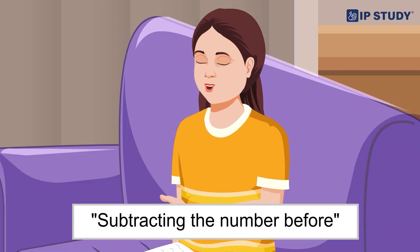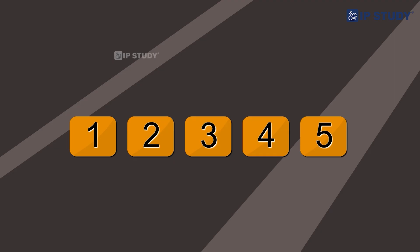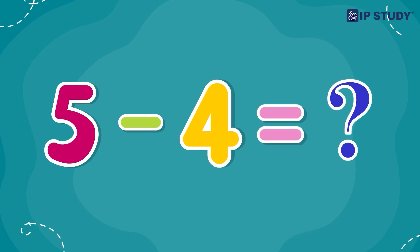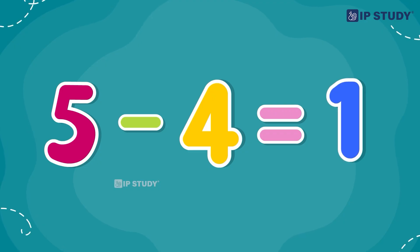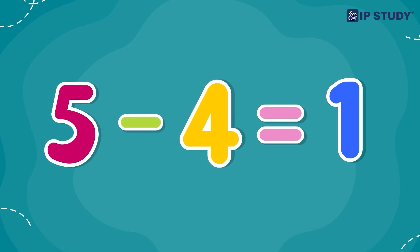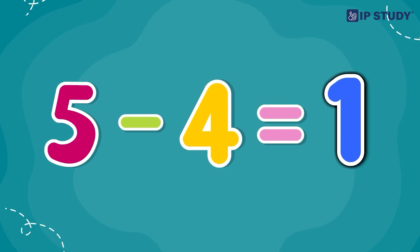Grandpa explains subtracting the number that comes right before. For example, the number before 5 is 4. So if we subtract 4 from 5, we get 1. When we subtract the number that comes right before, we always get 1.